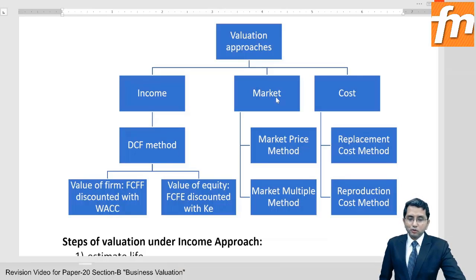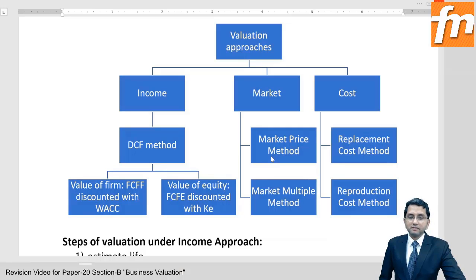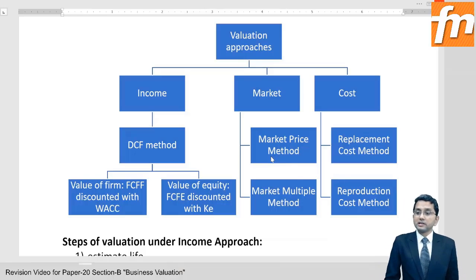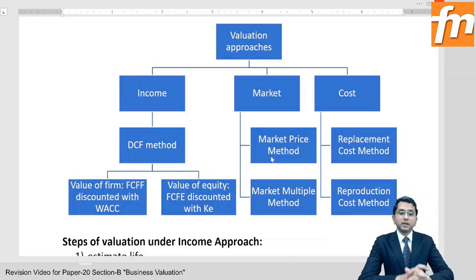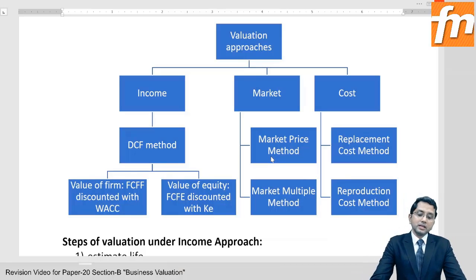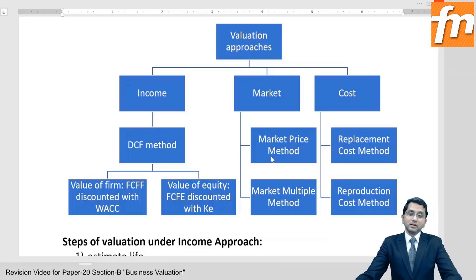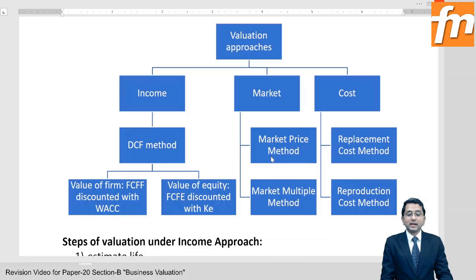Under the market approach there is the market price method — if your company's share is already listed, the prevailing market price at which it is traded is the value. But if the share is unlisted — whether an unlisted public company or a private company — then you use the market multiple of comparable companies. This can be a comparable company or a comparable transaction. We will study the market multiple method.